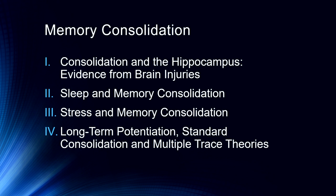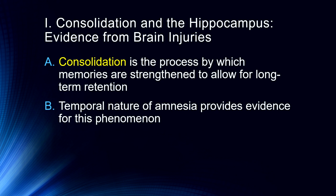We'll look at some evidence from brain injuries and revisit some things discussed in earlier lectures, bringing it home to this idea of consolidation. Then we'll talk about sleep and memory consolidation, stress and memory consolidation, and finally we'll move through three major areas: the cellular basis of memory, long-term potentiation, standard consolidation theory, and multiple trace theory. So let's get into consolidation in the hippocampus.